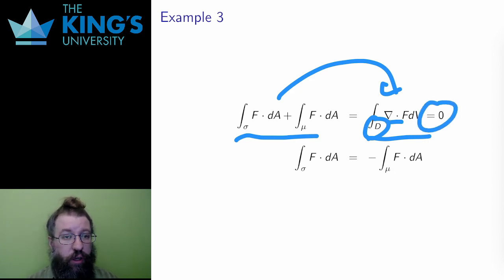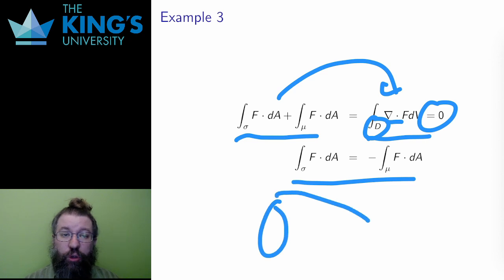Well that means that the flux integral over sigma must be equal to the negative of the flux integral over mu. Sigma was this surface of revolution of a square root function, and mu was just a disk.